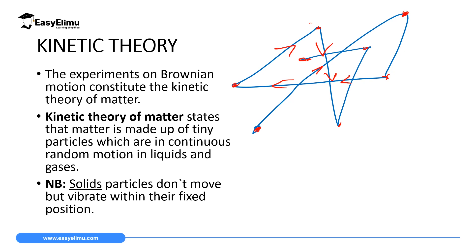That random movement of particles of matter in liquids and gases is what constitutes the kinetic theory of matter. The kinetic theory of matter states that matter is made up of tiny particles which are in a continuous random motion in liquids and gases. When defining kinetic theory of matter, it's very important to note these keywords: matter is made up of small particles, those particles are in a continuous random motion, and they only move in liquids and gases.